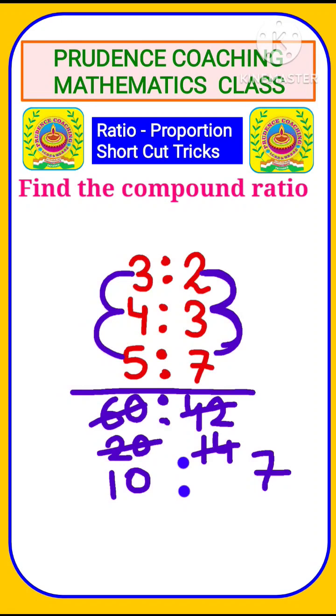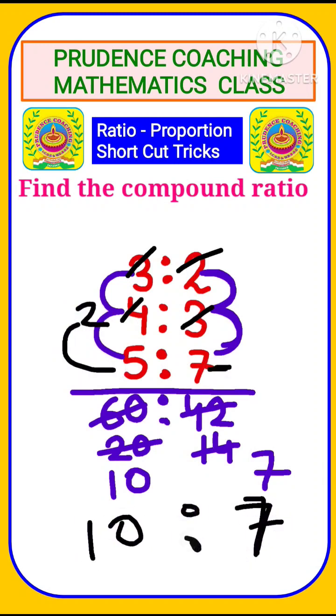And for the shortcut you can do one thing, that is, as you can see here, 3 and 3 is there in both sides, you can cancel it out. Again, 2 here we have, and here 2 2s are 4, you can cancel out. So directly you will get 2 5s are 10 over here, and here 7 is left out. So 10 is to 7 will be your final answer.